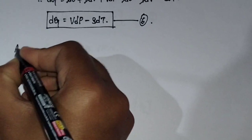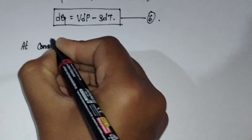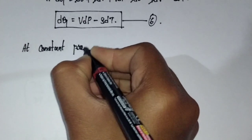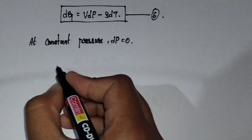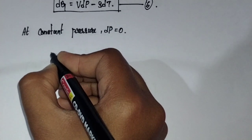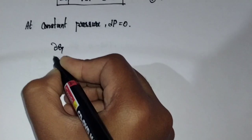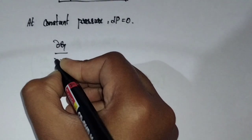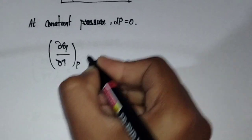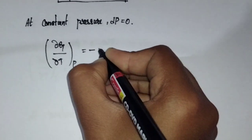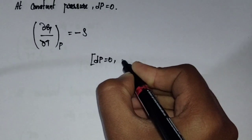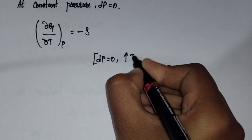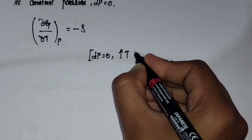At constant pressure, when we differentiate the change in Gibbs free energy — that is (∂G/∂T) at constant pressure — we get negative entropy, which equals minus S. So at constant pressure, when the value of temperature increases, the value of Gibbs free energy will decrease.